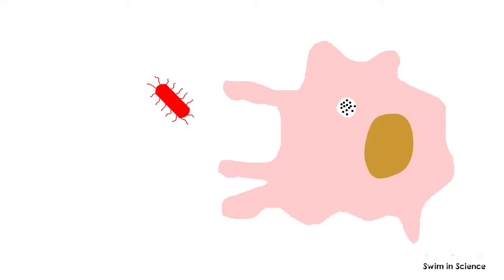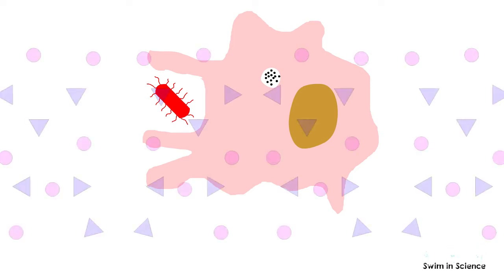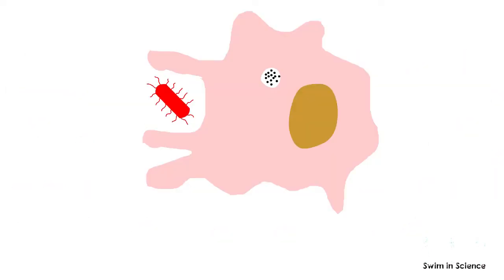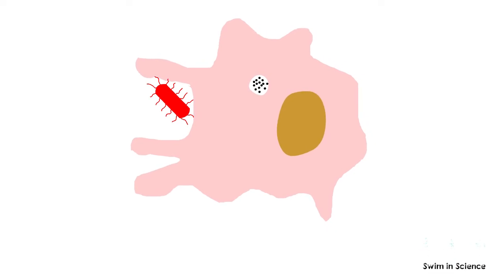In the first step of phagocytosis, macrophages are attracted toward a substance under the influence of various chemical substances generated by the immune response. This process is called chemotaxis. The next step in phagocytosis is the adherence of the antigen to the macrophage cell membrane.